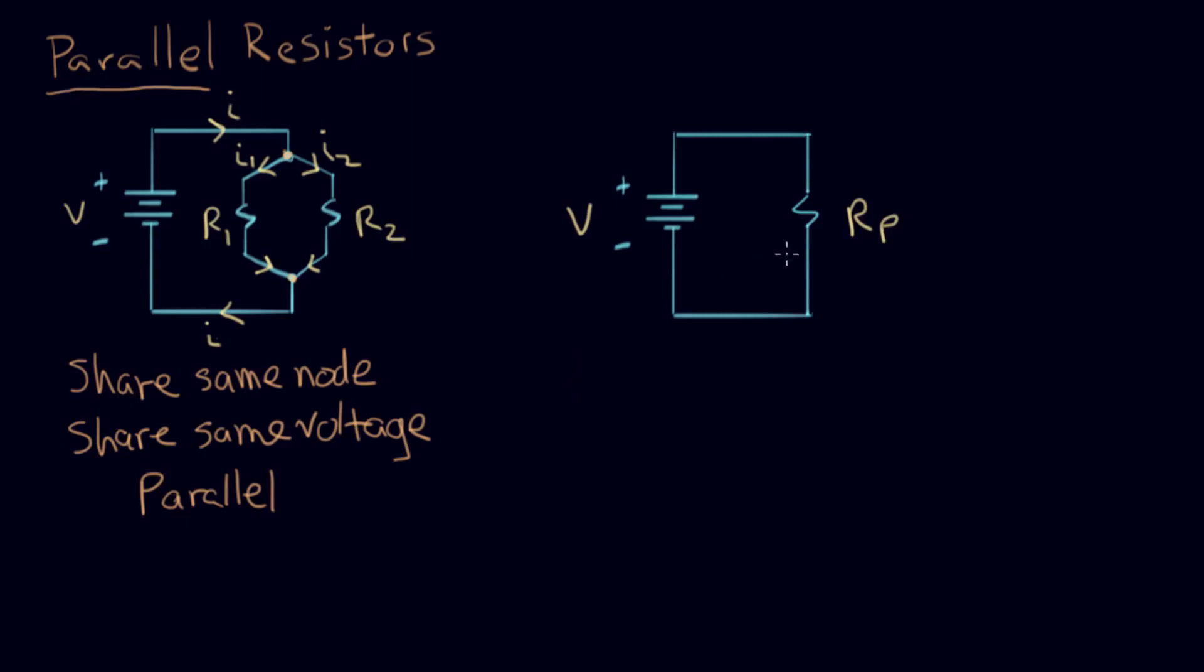RP. And this resistor causes the same current I to flow here. And now we're going to work out an expression for that. We want to figure out how do we calculate RP in terms of the two parallel resistors here. So let's go at it.